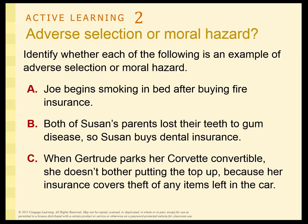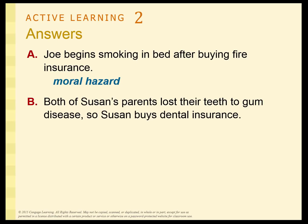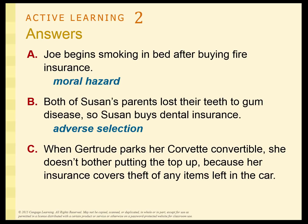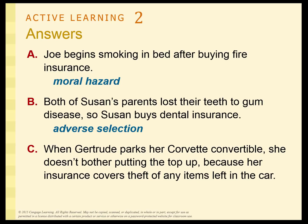Here are three quick examples: Joe smoking in bed after getting insurance — that's moral hazard. Susan knowing she's likely to have future health problems and buying insurance because of that — that's adverse selection. Gertrude leaving the top down on her convertible because she knows her insurance covers theft — that's moral hazard.